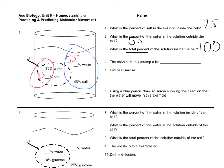The solvent in this example is water. That's what's doing the dissolving. And then the definition of osmosis is the movement of water from an area of greater concentration to an area of lesser concentration without the use of energy.